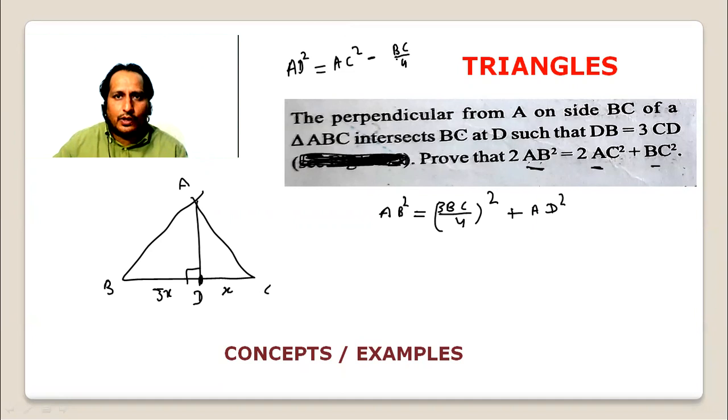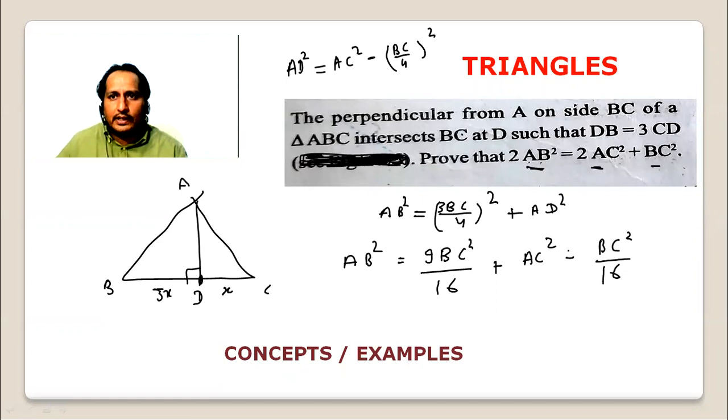BC by 4 whole square. AD² value: AC² minus AB² is equal to 9BC² by 16. Plus AD² value, AD² value is AC² minus BC² by 16.